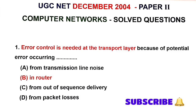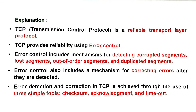UGC Net December 2004 Computer Network solved questions. First question: Error control is needed at the transport layer because of potential errors occurring. Answer B: in router. Transmission Control Protocol is a transport layer protocol.